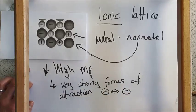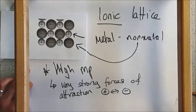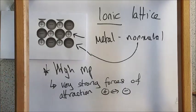They really strongly attract each other - we call it electrostatic attraction - and that happens in all directions because they're surrounded by positives if they're negative and surrounded by negatives if they're positive. So ionic lattices have very high melting and boiling points.